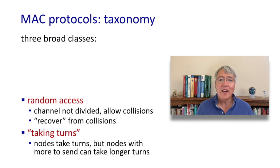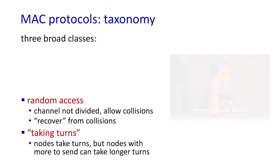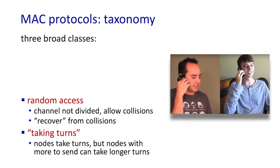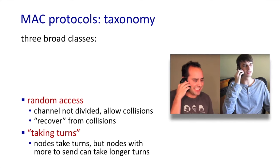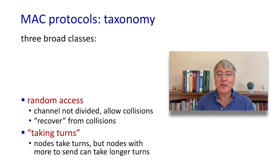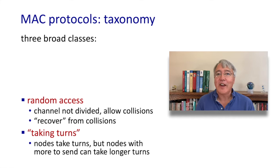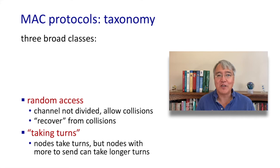Think about conversation — it's not explicitly coordinated; people talk when they have something to say. That's a pretty common form of human multiple access. This approach of speaking when you have something to say without explicit coordination sometimes works, but sometimes it really doesn't. This kind of approach is known as a random access protocol, and it's actually widely used in practice. If you're polite and you listen before you speak, that's known as carrier sensing. And if you're super polite — if somebody else starts talking while you're talking, you stop — that's called collision detection.